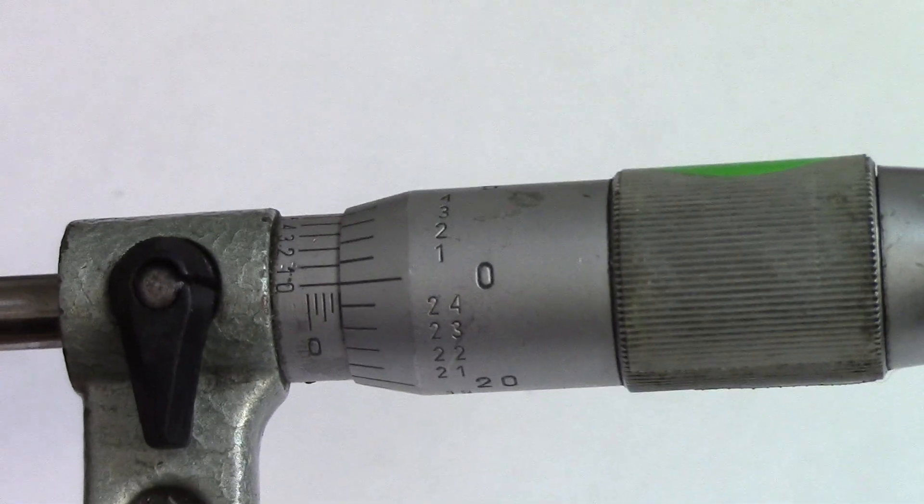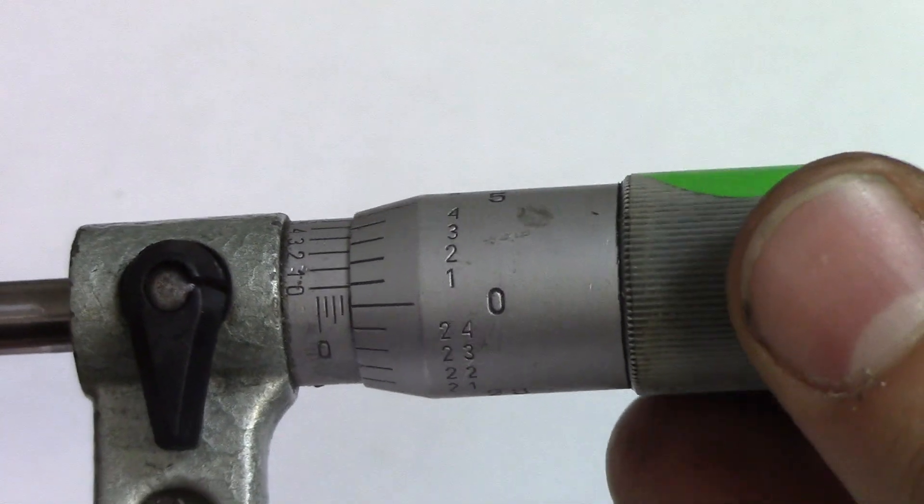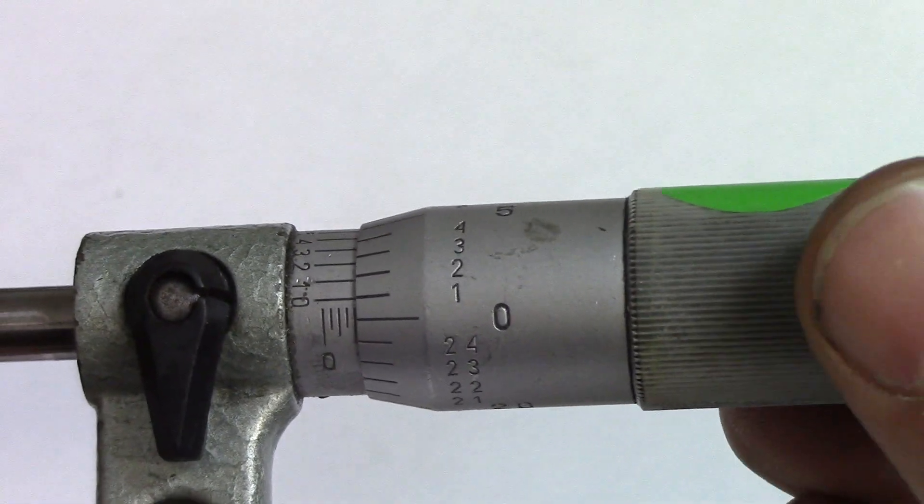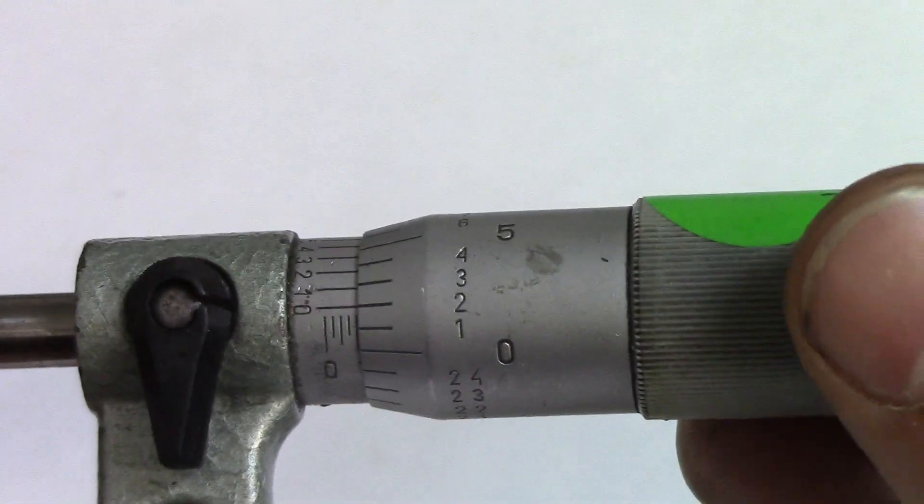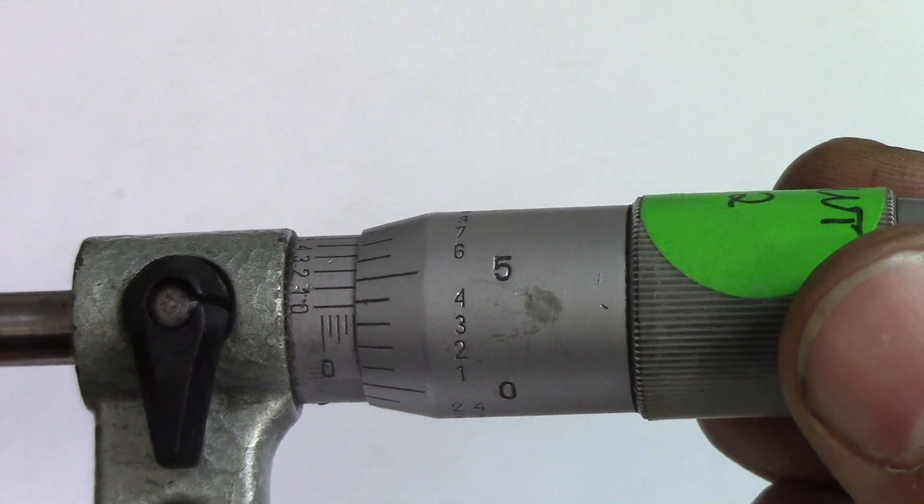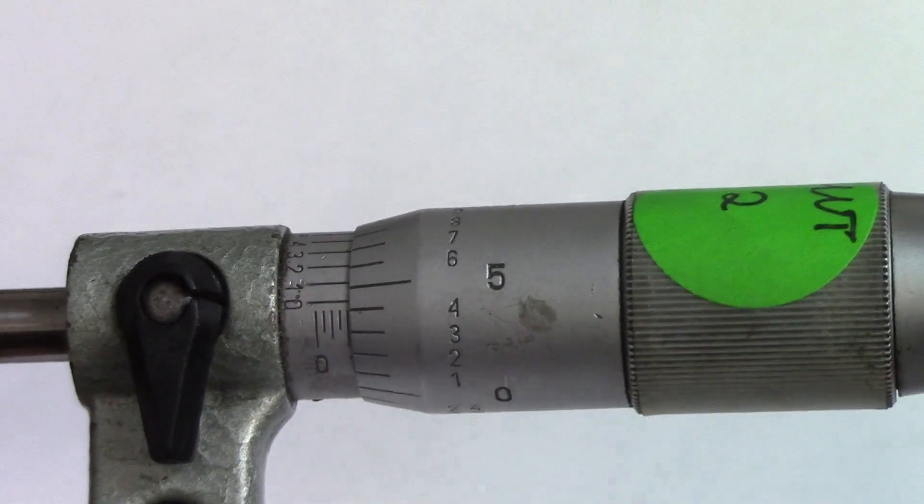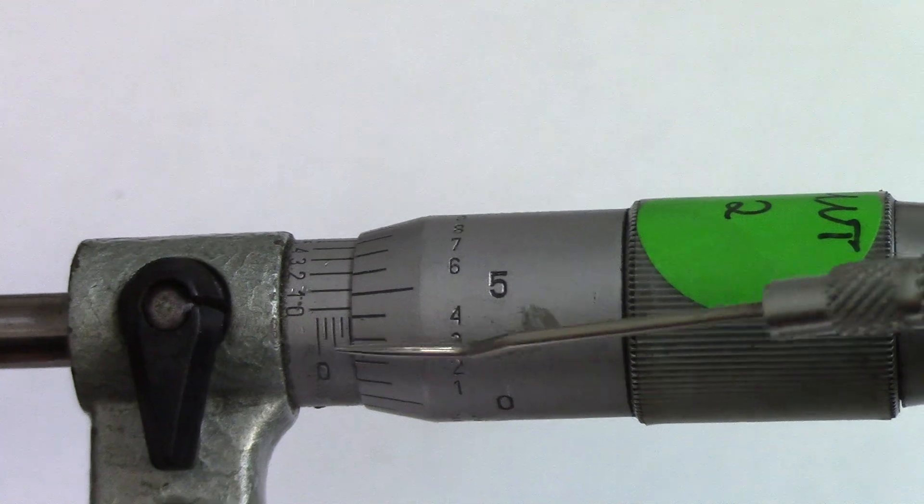If I move this one mark, that's 0.101, 0.102, 0.103, and so on. You just take your 25 thou increments, add them up, and then add your one thou increments to that.